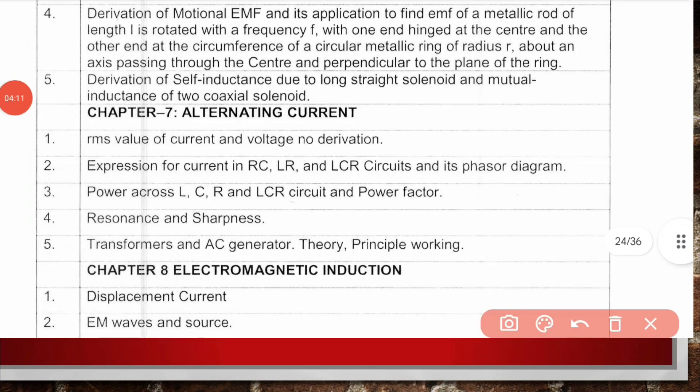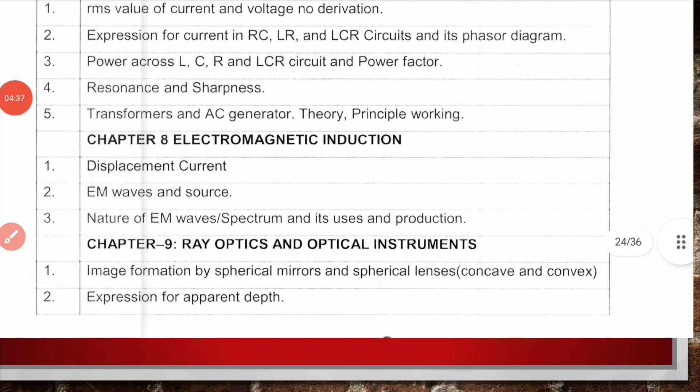Chapter 7, Alternating Current: RMS value of current and voltage with no derivation, expression for current in RC, LR and LCR circuits with phasor diagrams, power across LCR circuit and power factor for inductor, capacitor and resistor, resonance and sharpness, and transformer and AC generator covering theory, principle and working.